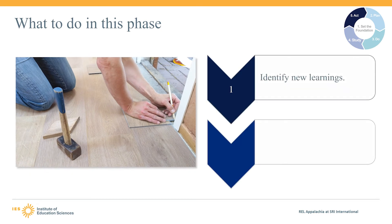There are two steps in this phase: identify new learnings and think about next steps, adjustments, and implementation improvements that will help the school reach desired student outcomes.